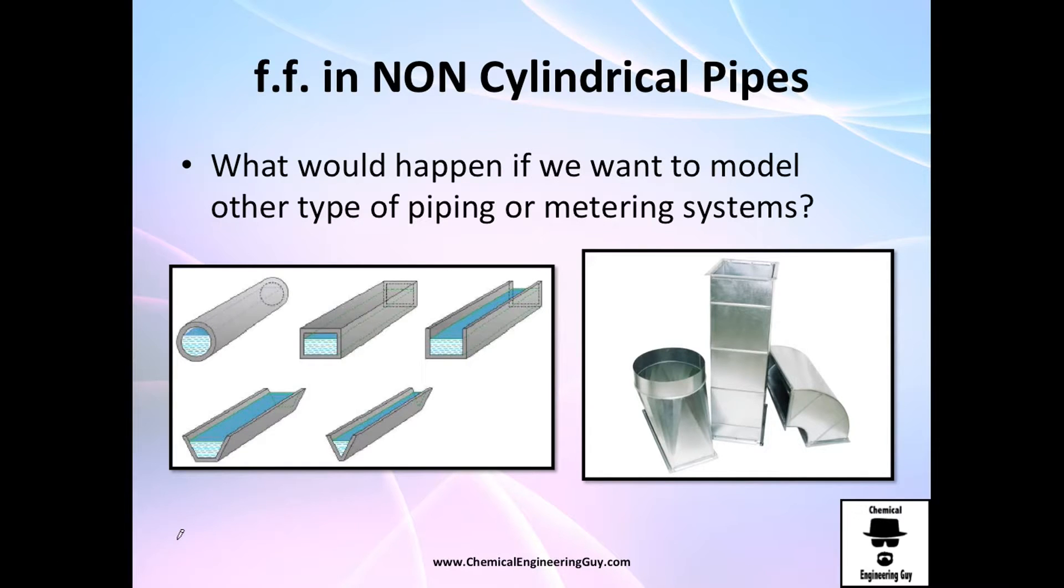So guys, what would happen if we had a non-cylindrical pipe or conduit, for example, or if the pipe is not full enough, maybe three-fourths, or we use a square duct, or even an open channel, or something like this.